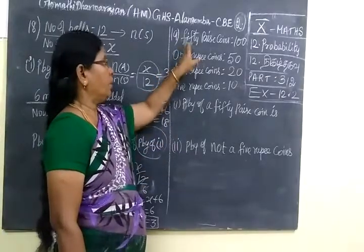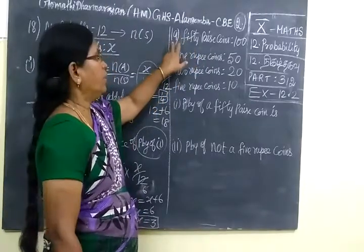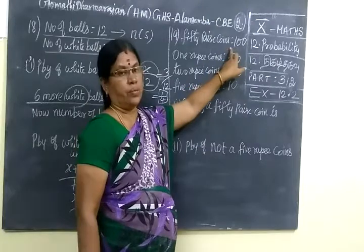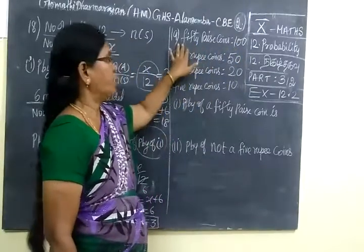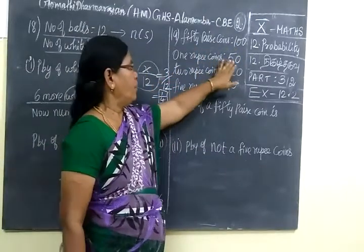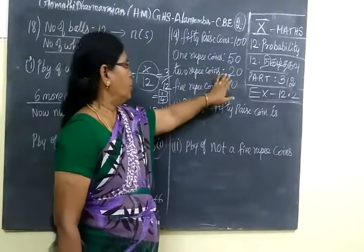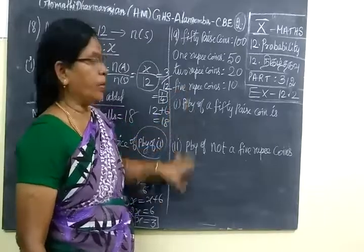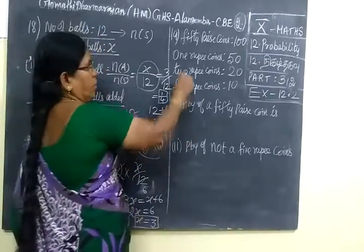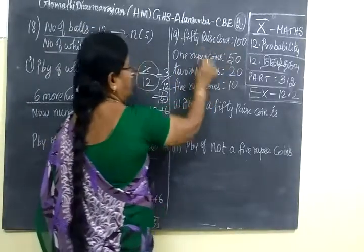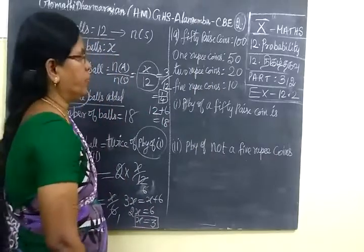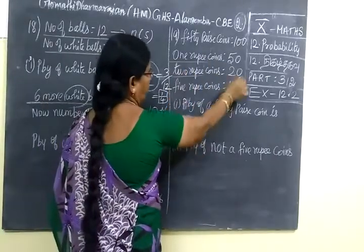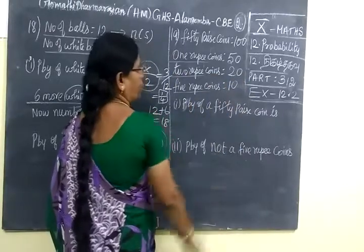Now in the next question we have nineteenth question. We are given 100 50-paise coins, 50 1-rupee coins, 20 2-rupee coins, 10 5-rupee coins. We are given number of coins: 100 50-paise coins, then 50 1-rupee coins, then 20 2-rupee coins, and 10 5-rupee coins.